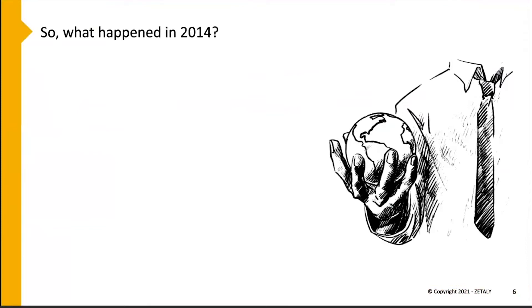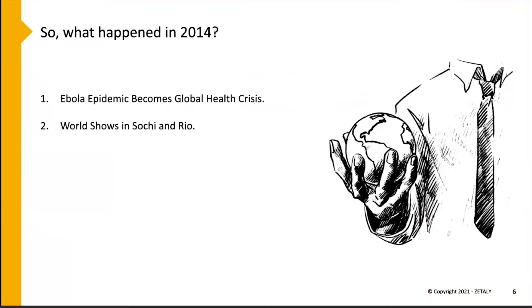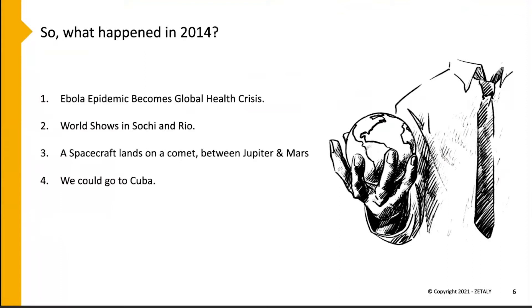What happened in 2014? Ebola, world shows in Sochi and Rio, a spacecraft landed on a comet between Jupiter and Mars, Cuba opened its doors - and the big, earth-shattering announcement that IBM said the 4% would be starting.